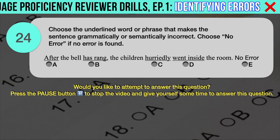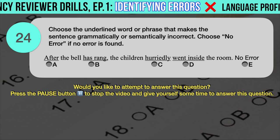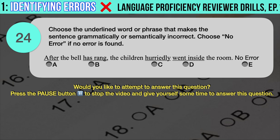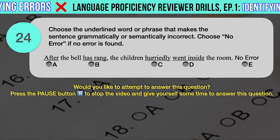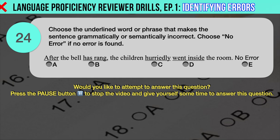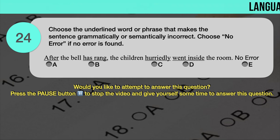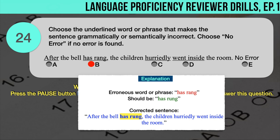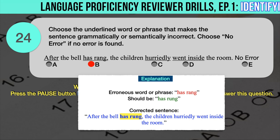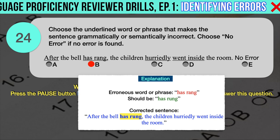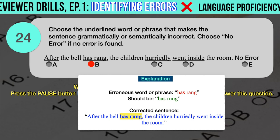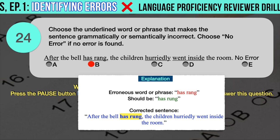Drill question number 24. 'After the bell has rang, the children hurriedly went inside the room.' The correct answer is B. 'Has rang' (spelled with an A) should have been 'has rung' (spelled with a U), which is the correct past participle of the verb 'to ring.' Correct sentence: After the bell has rung, the children hurriedly went inside the room.